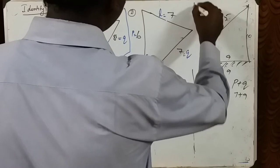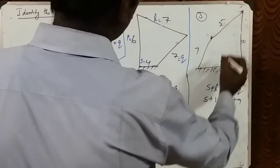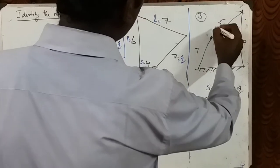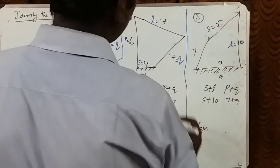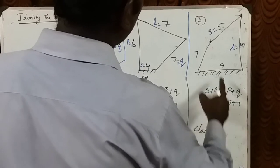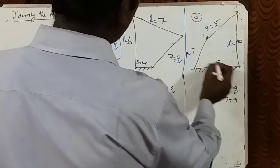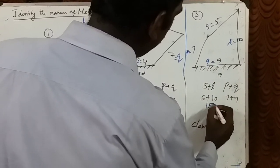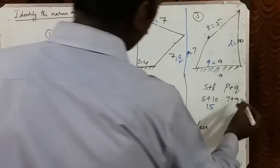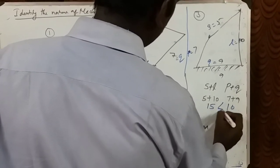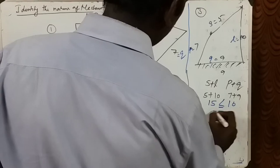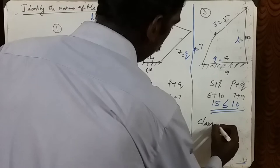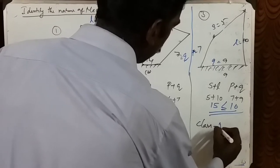Problem 3: longest link L = 10, shortest link S = 5. So 5 + 10 = 15. The other two links sum to 16. Since 15 < 16, this equation satisfies Grashoff's law, so it belongs to class 1 mechanism.